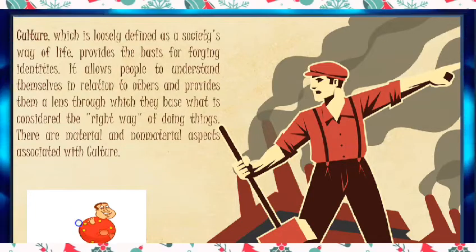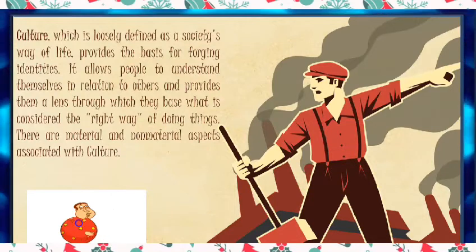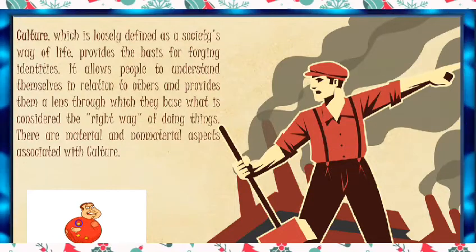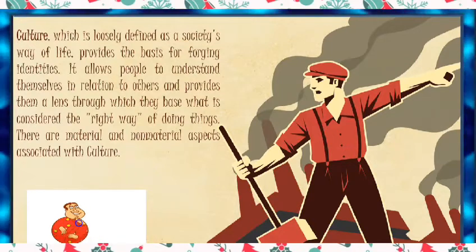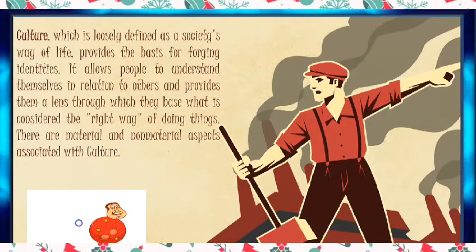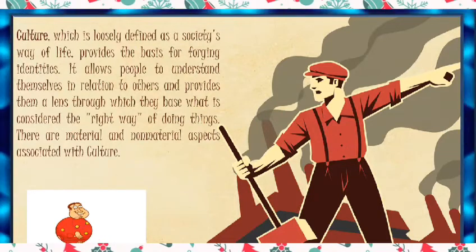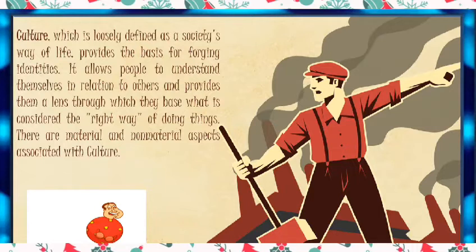Next would be Culture, which is loosely defined as a society's way of life, and provides the basis for forging identities. It allows people to understand themselves in relation to others and provides them a lens through which they determine what is considered the right way of doing things. There are material and non-material aspects associated with culture. Material aspects include trends, fashion, clothing, and music — things with substance or physical form. Non-material aspects refer to values, customs, norms, and behaviors that are passed on from generation to generation.